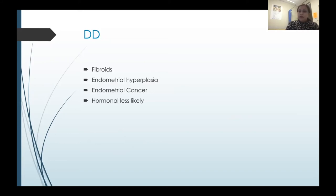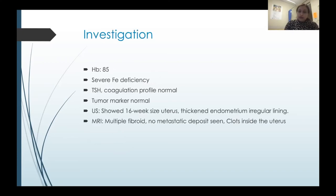Even after removing the fibroids and inserting the Mirena, she continued to bleed. The bleeding never stopped. She was also on Primolut on top of the Mirena, but her hemoglobin dropped to 55. She was seen by a hematologist to see if there was anything else that could be done to control her bleeding or maintain her hemoglobin, and the hematologist called me for an urgent review.